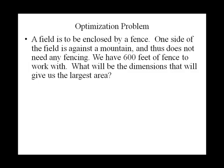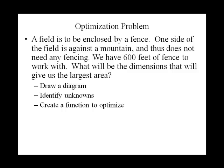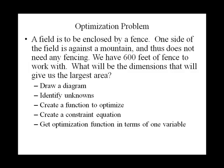Now there's some steps we want to adhere to when doing an optimization problem. First, when possible we want to draw a diagram of what's going on. Then we want to label any unknowns. Then we'll create a function to optimize, that is our objective function. When possible we create a constraint equation and we'll use that constraint equation to get the optimization function in terms of one variable. Once we have that, we optimize using calculus.